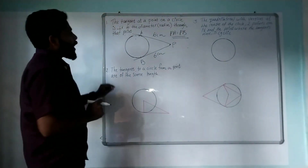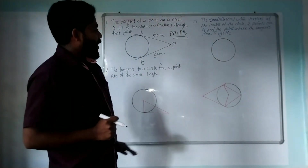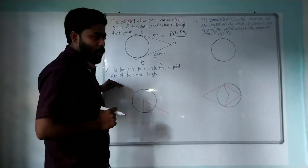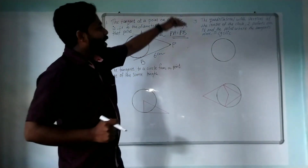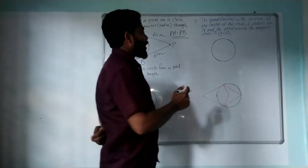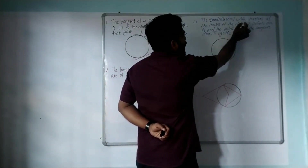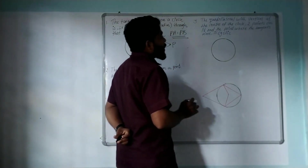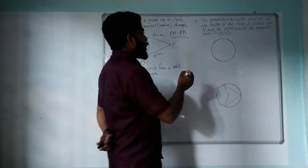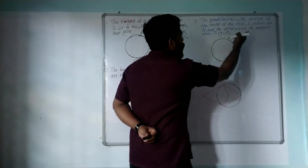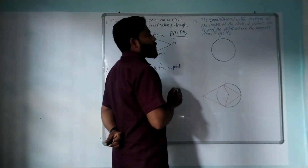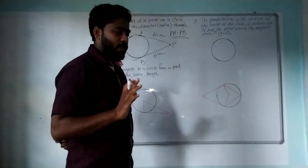If we have 4 cm — the quadrilateral with vertices at the center of the circle, two points on each side and the point where the tangents meet, is cyclic.